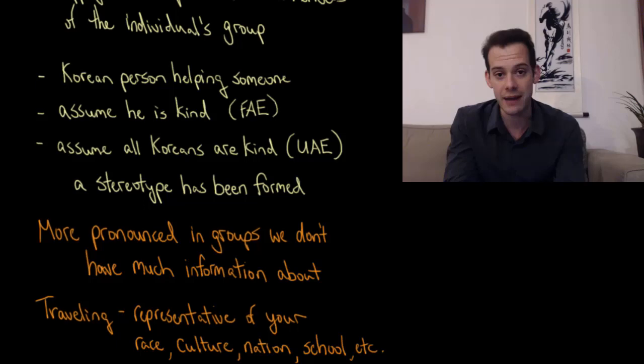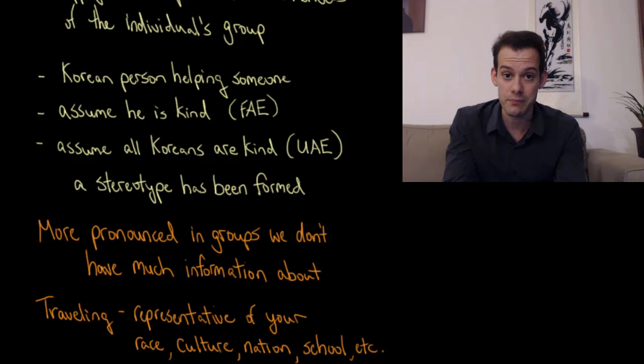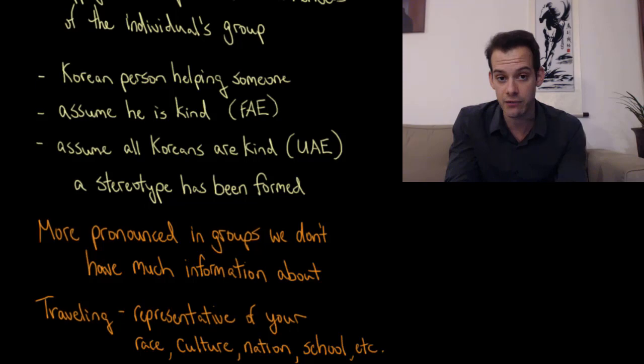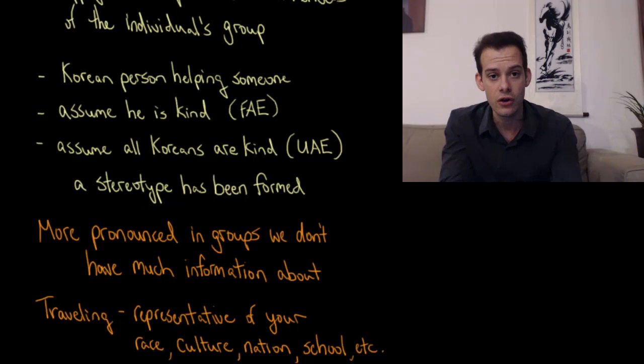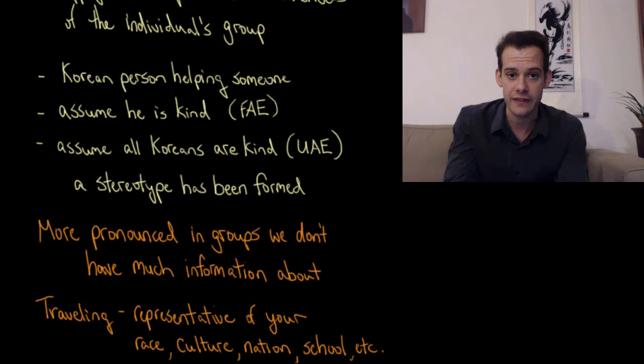If it's a group I have lots of information about — if I've interacted with hundreds of Koreans — then I'm likely to recognize that they vary as individuals: some are kind people and some not so much. We can keep this in mind when traveling or meeting new groups of people, because you really do become a representative for your groups, especially if it's a group those people don't have much information about. If you're traveling somewhere fairly remote, you might be a representative for your race, culture, nation, or school. If people have never met anyone from your school before, they might make the ultimate attribution error and assume your disposition applies to everyone else from your school.